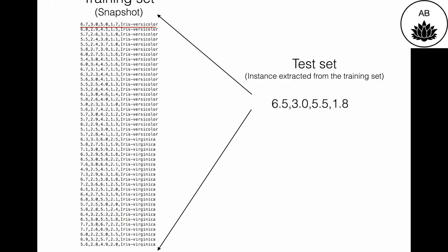The Euclidean distance between one test set instance will be calculated against all of the training set instances. What you see on the right is the test set instance and on the left is a snapshot of the entire training set. The algorithm calculates the Euclidean distance between the test set instance and one training set instance at a time — for example, the one underlined in red — then moves on to the next one. This goes on for all training set instances, and the least distance gives an indication of the class of the test set instance.